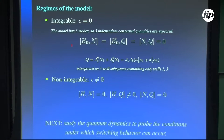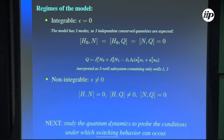In the integrable case the system has three degrees of freedom, so we expect three independent conserved quantities: the energy, the number of particles, and a charge Q, which can be interpreted as a two-well subsystem containing only wells 1 and 3. These three independent operators commute among themselves. When we apply the external field and break integrability, we no longer have this set of three conserved operators — Q does not commute anymore. For this scenario, we study the quantum dynamics for these two cases to probe the conditions under which switching behavior occurs.